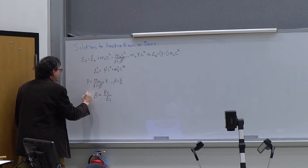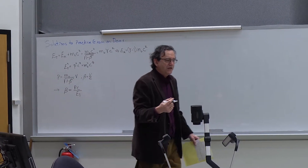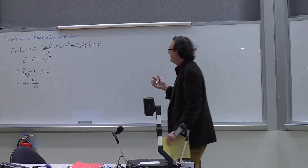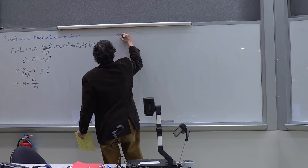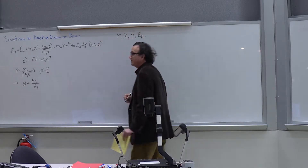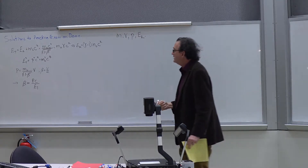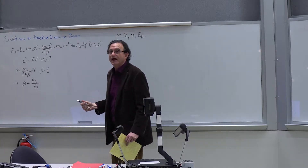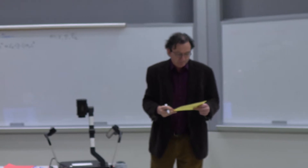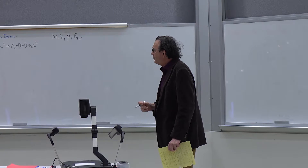The important takeaway is that there are four variables in these equations: mass, velocity, momentum, and kinetic energy or total energy. If I know any two of them, I can calculate the other two from these equations. That's what we want to work on today — how we actually go about using them.